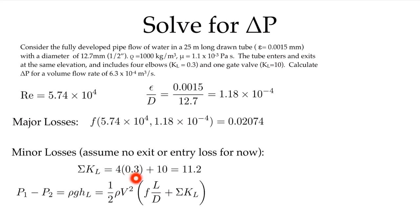So my total minor losses then are going to be four of the elbows at 0.3 each and one gate valve with a kL of 10.